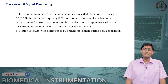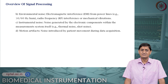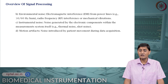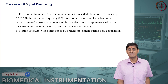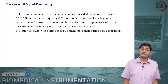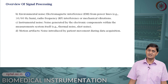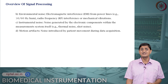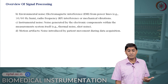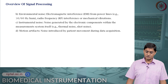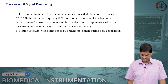Then there is environmental noise: electromagnetic noise, hum of the AC at 50 or 60 hertz, RF noise, mechanical vibrations, and other measuring or therapeutic devices in the ICU — all these can cause electromagnetic interference or noise. And then instrumentation noise — noise generated by electronic components within the measurement system itself — that is thermal noise, shot noise, and motion artifacts introduced by patient movements during data acquisition.